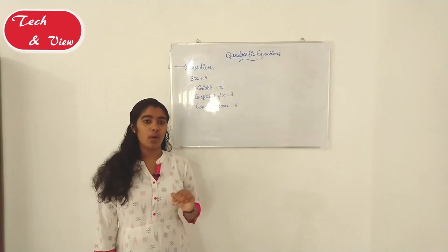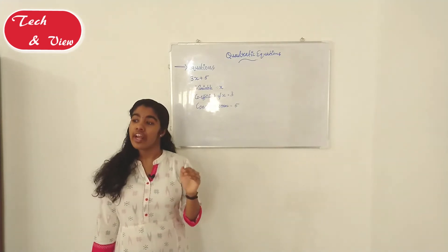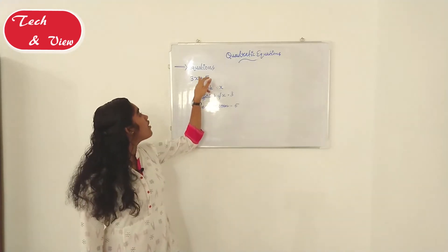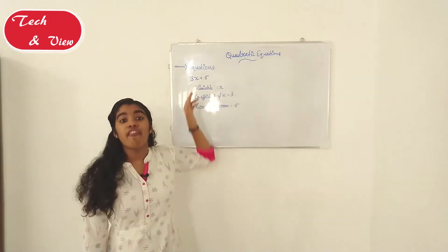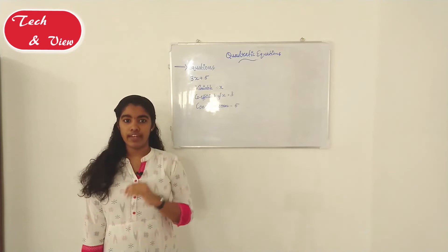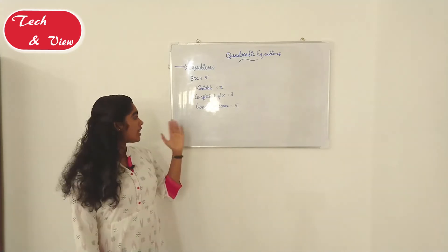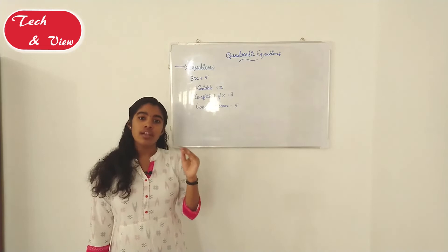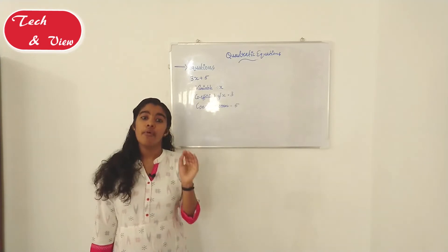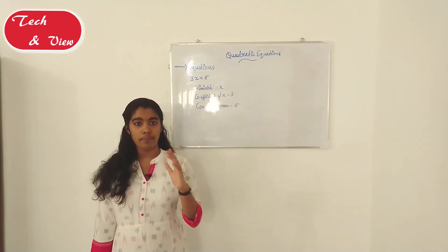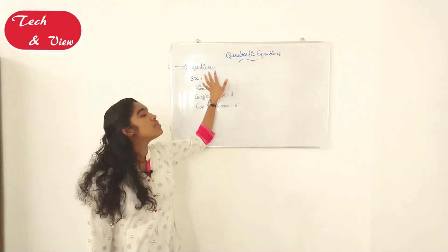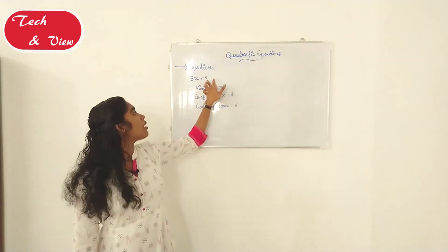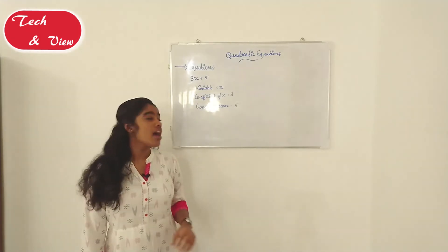So you have a question: what is this power? It is the power of x. That's why we call the constant term 5 a constant term — this constant term has the power 0. It is the degree. It is always 0, so the constant term is the power of x to the degree 0.